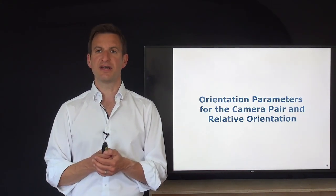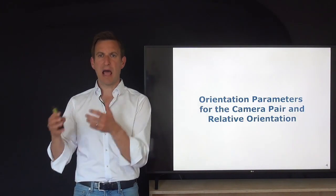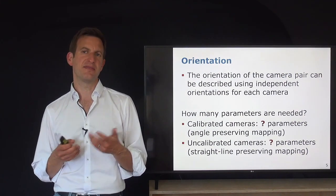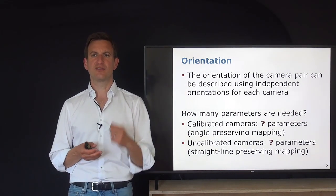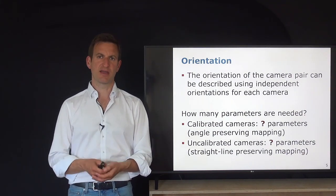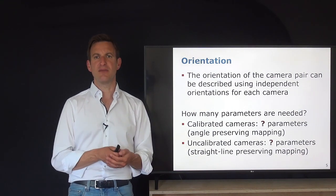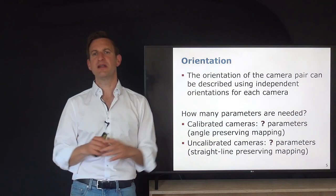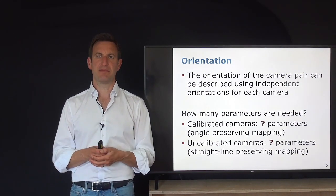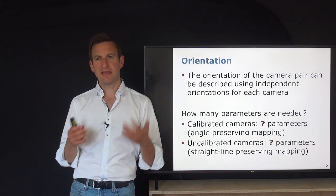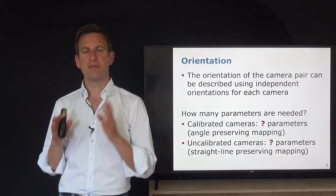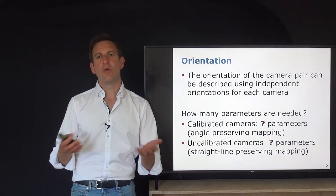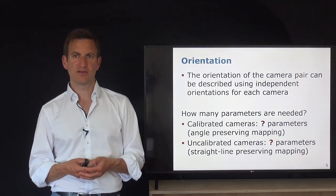We start by describing the relative orientation of the camera pair — how can we describe orientation in an absolute and in a relative manner? The orientation parameters are those involved in the mapping x = PX, which we used for the single camera to describe how a 3D point maps onto the camera image. If we have two cameras, either fixedly mounted or freely moving, how many parameters do we actually need, and how does it differ for calibrated versus uncalibrated cameras?